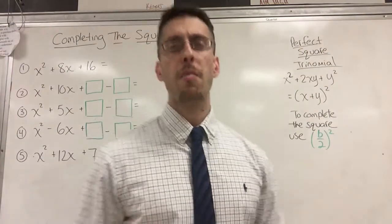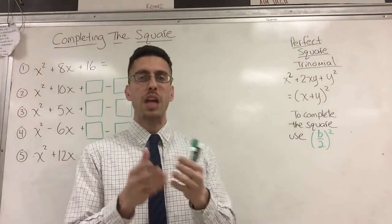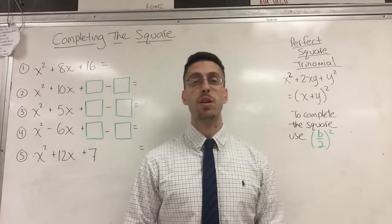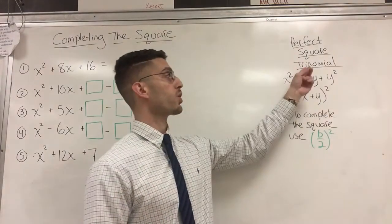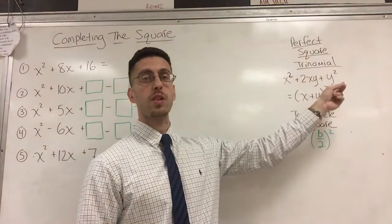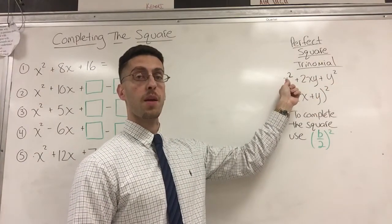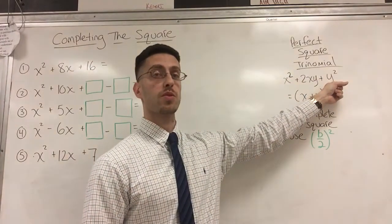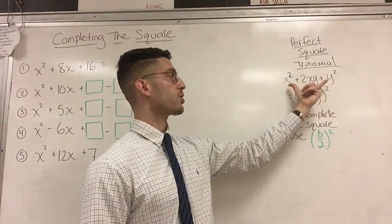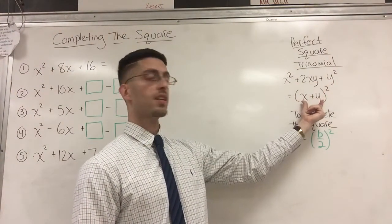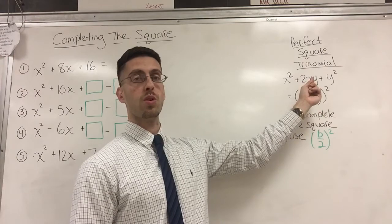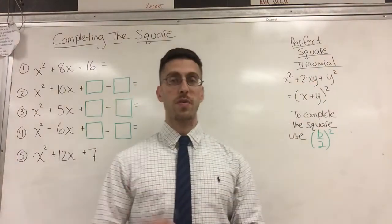In order to multiply binomials, you use first, outer, inner, and last or the distributive property. In order to recognize a perfect square trinomial, they're usually in the form that looks like this, where the first term is a perfect square, the last term is a perfect square, and the middle term is actually the first and last term times two. Let me give you a specific example in a second.